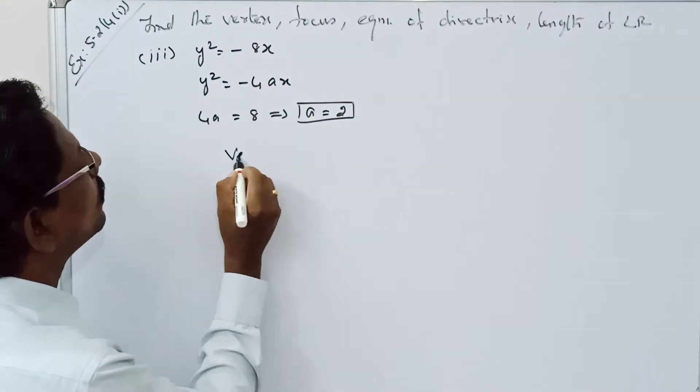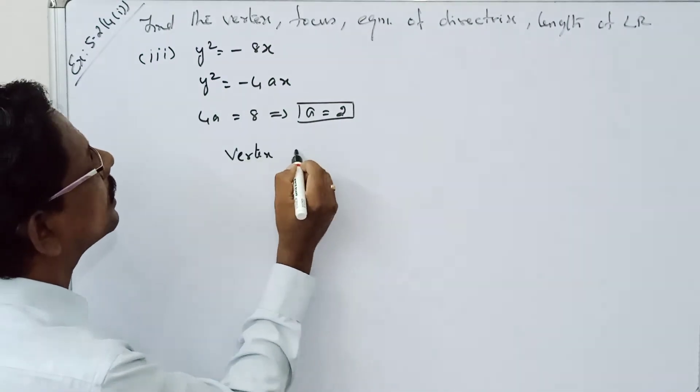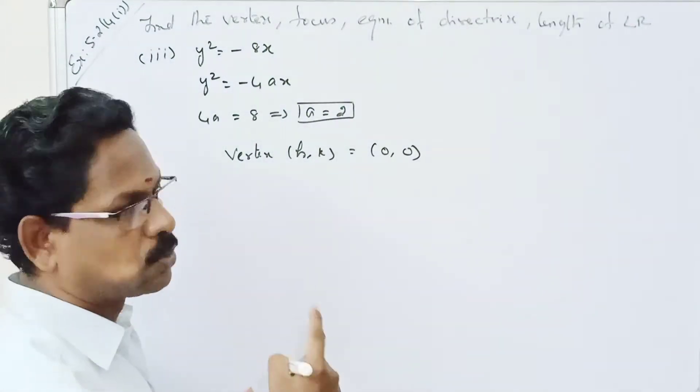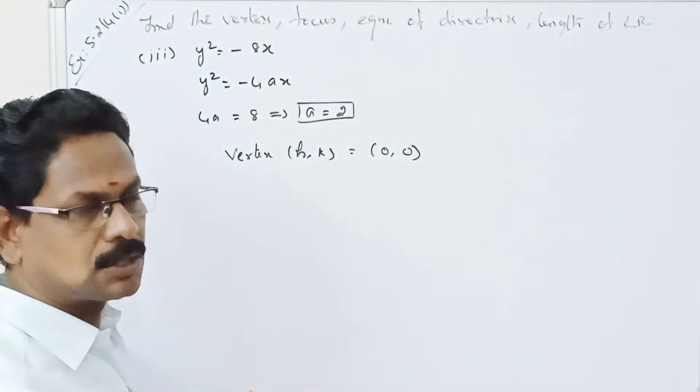So the vertex (h, k) is equal to (0, 0). The parabola center passes through the origin.